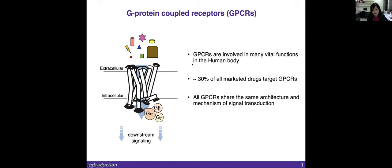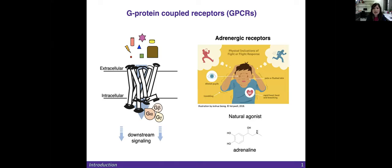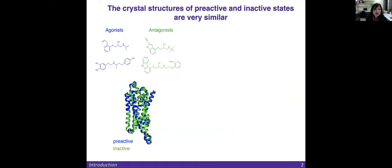We are working with adrenergic receptors, which are GPCRs that can sense amines, and they participate on fight-or-flight responses. Those receptors tell our body what to do when we are in danger or in a stressful situation. And they do that by sensing their natural agonist, which is adrenaline.